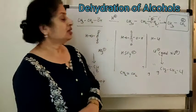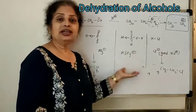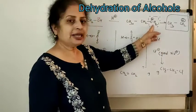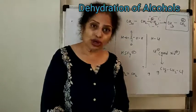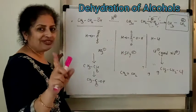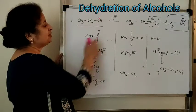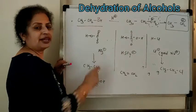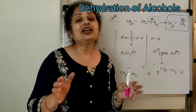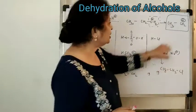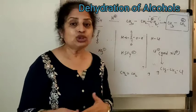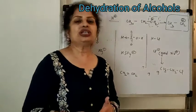So why don't we take hydrochloric acid? If we take HCl, H⁺ is provided, but the remaining ion will be chloride. Remember that chloride is a very good nucleophilic agent — it is a very good nucleophile. It will attack the carbocation and will give you a substituted product. So the elimination reaction will be replaced by substitution.